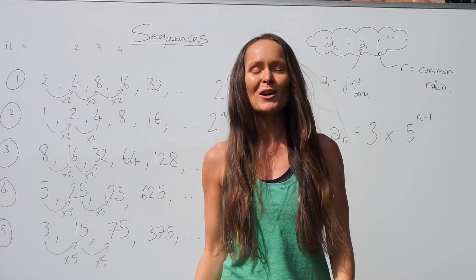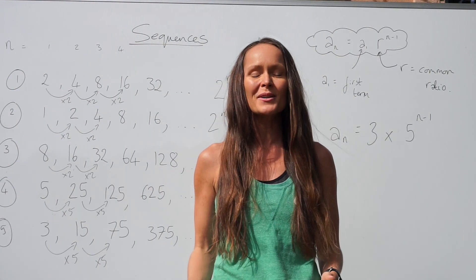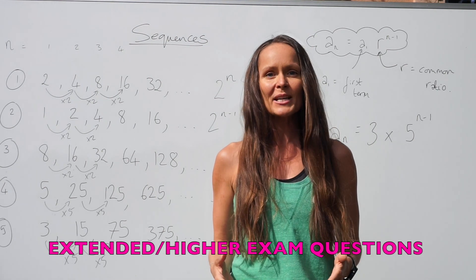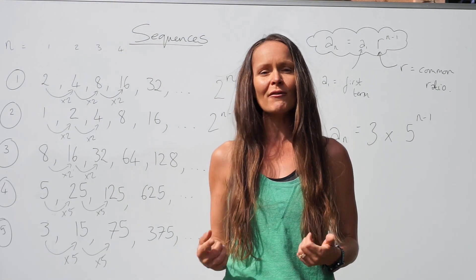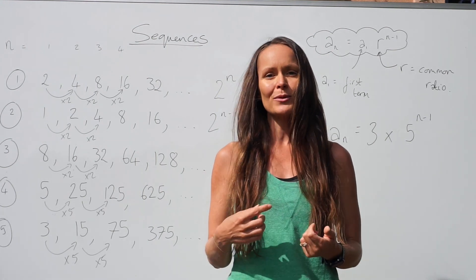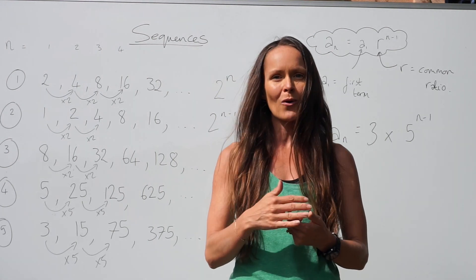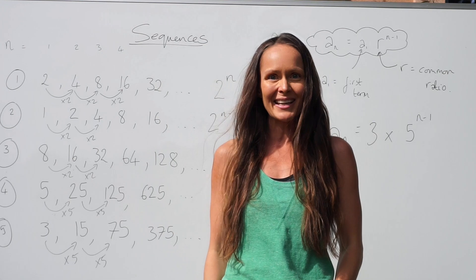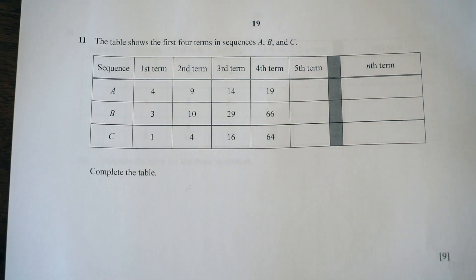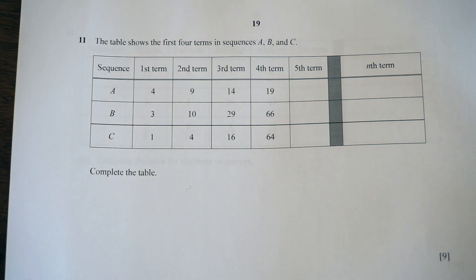In this lesson I'm going to show you sequence exam questions. If at any point you're finding it a little bit tricky, just go and have a look at my other lessons — sequences parts one, two and three — and then hopefully it will seem a little bit easier. In this exam question, the table shows the first four terms in sequences A, B and C, and we have to complete the table.